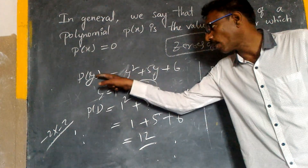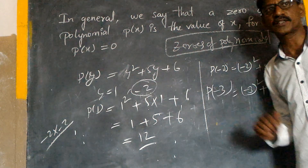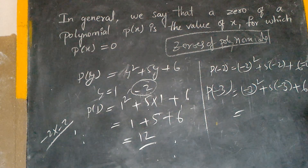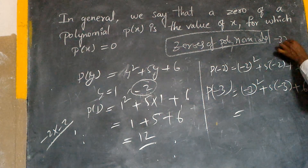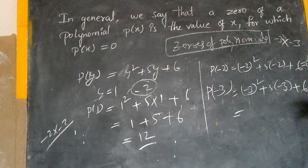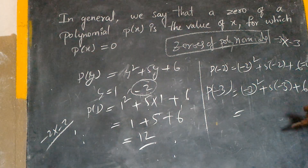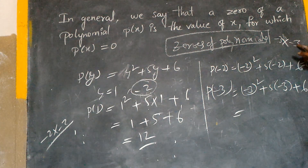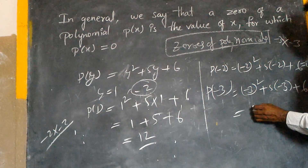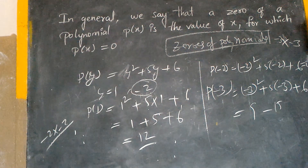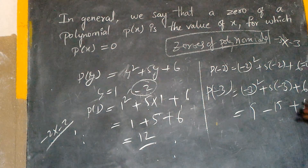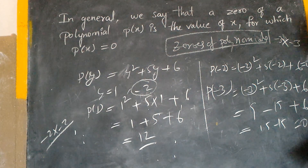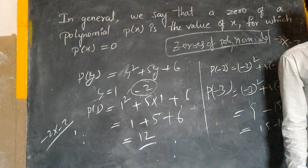Minus 3 whole square — 5 into minus 3 plus 6. Minus 3 whole square is 9. 9 minus 15 plus 6. 9 plus 6 is 15. Fifteen minus fifteen is zero.